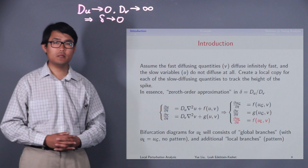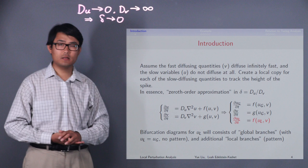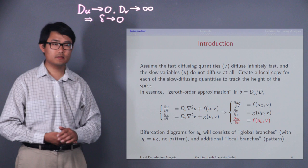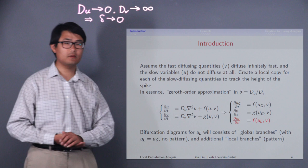Our recipe of transforming the PDE here to the LPA system is as follows. Since the fast diffusing variable v diffuses infinitely fast, it is always spatially homogeneous. So we can get rid of the diffusion term here and represent v with an ODE variable that depends only on time.